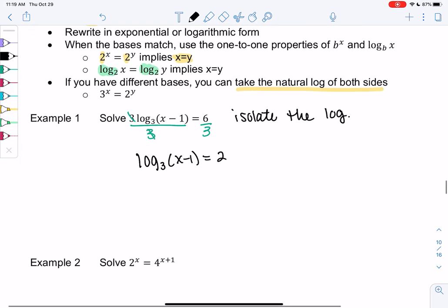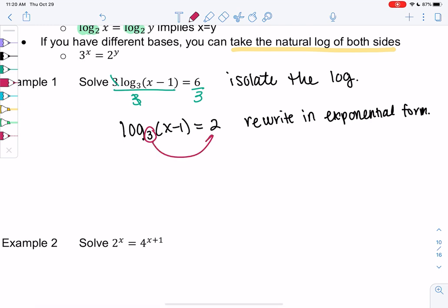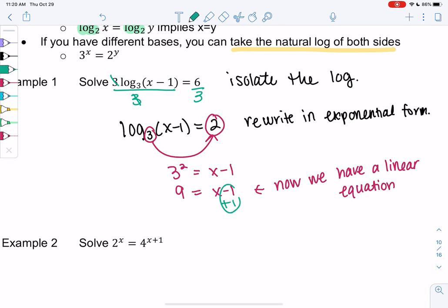And now that the log is isolated I'm going to go ahead and rewrite in exponential form. That will help me get rid of the log. So we don't have matching bases because we don't have a log on both sides so the trick here is to rewrite in exponential form. So 3² equals x - 1. So 9 equals x - 1 and now we have a nice linear equation. Much easier to solve. And so I'll just add 1 to both sides. And so x is 10 and that's it.